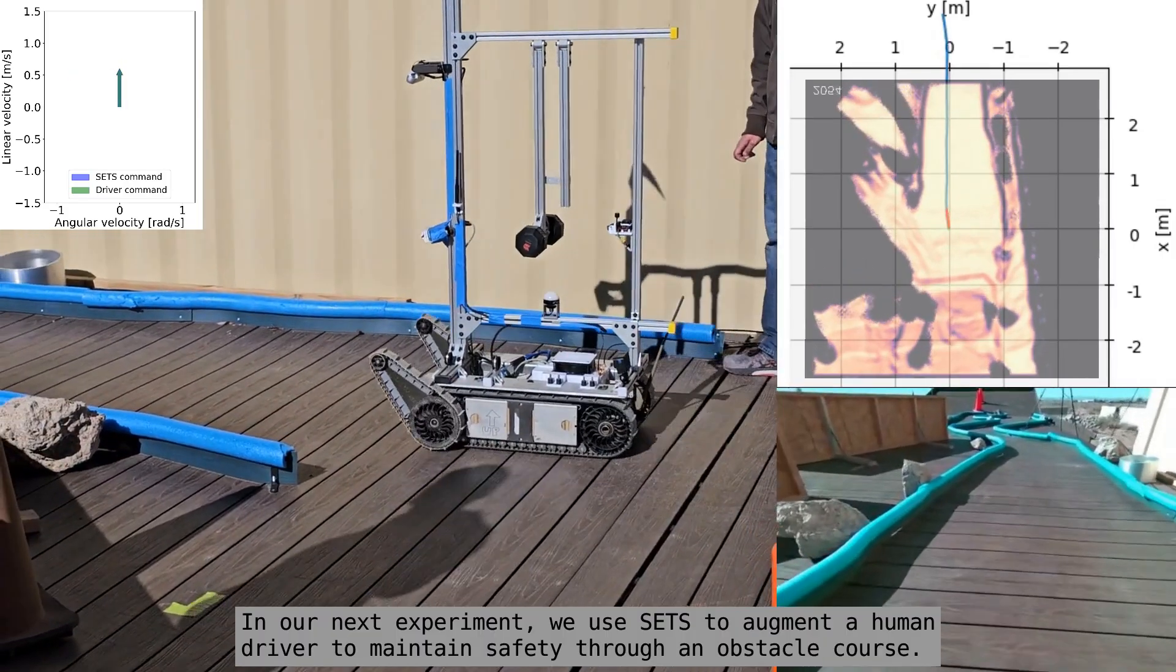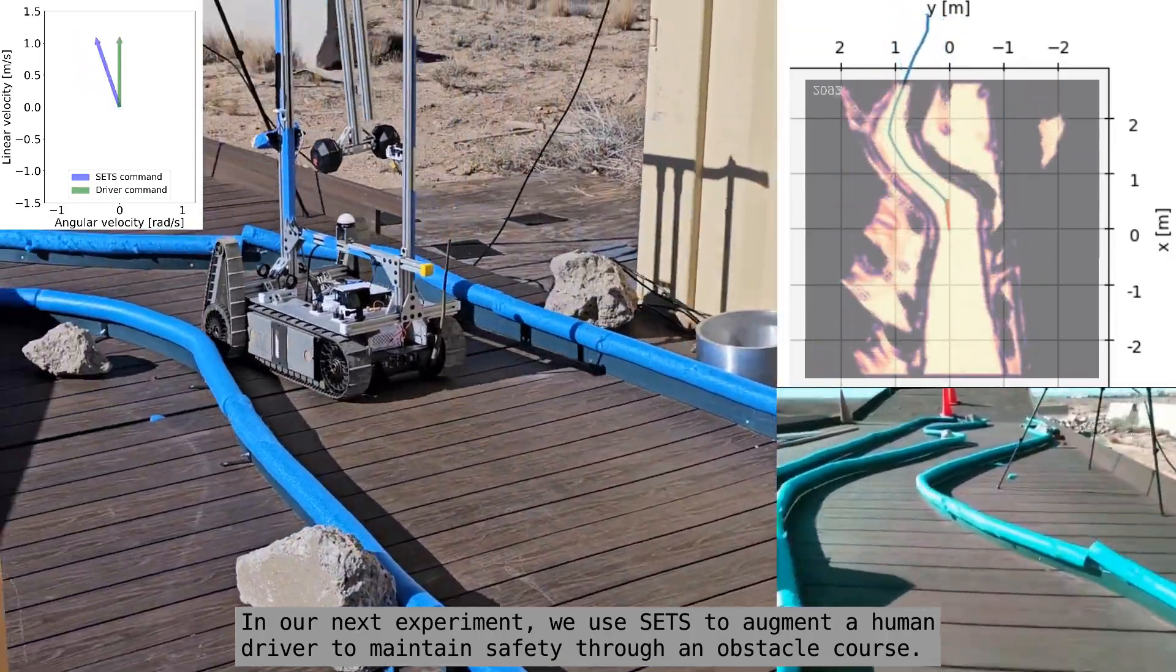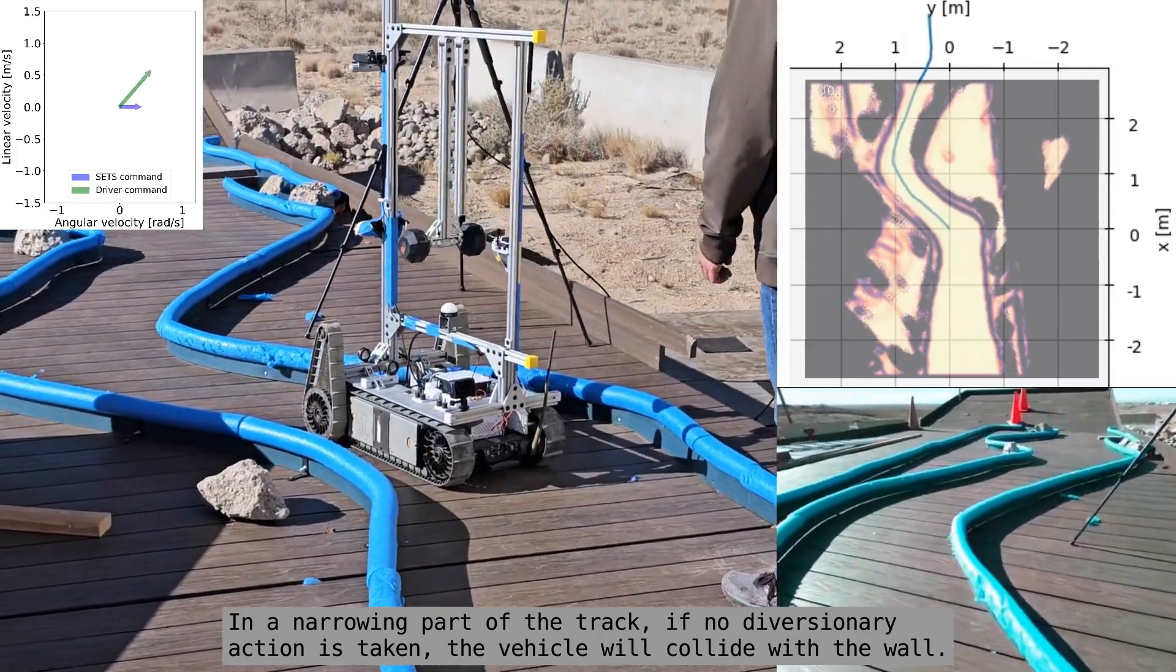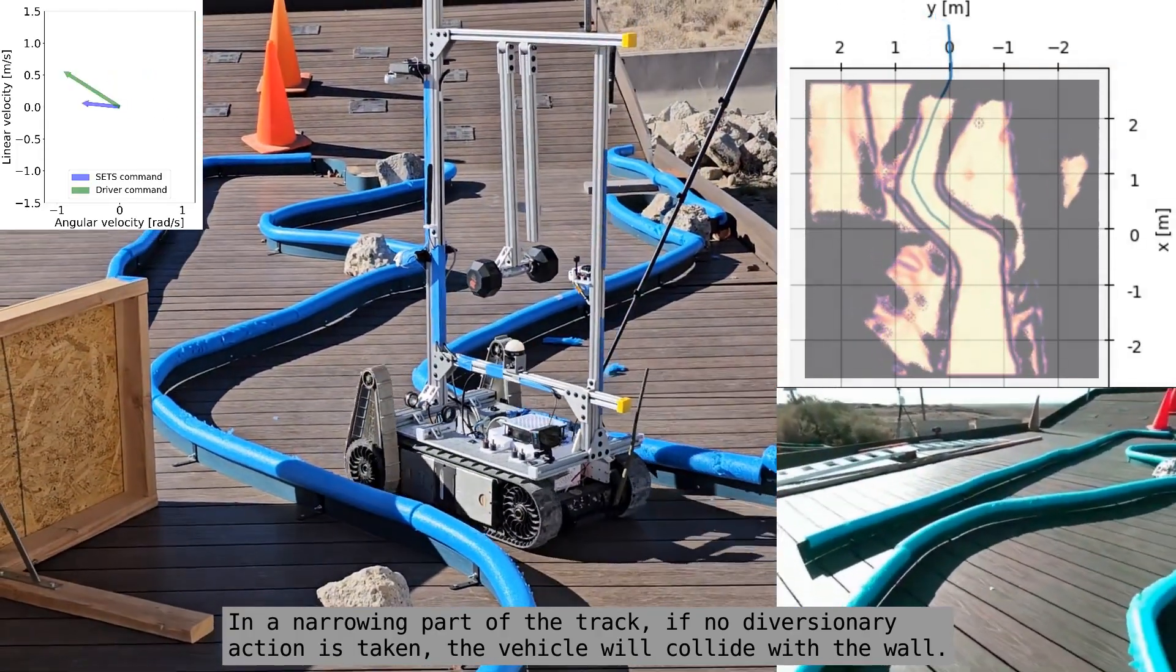In our next experiment, we use SETS to augment a human driver to maintain safety through an obstacle course. In a narrowing part of the track, if no diversionary action is taken, the vehicle will collide with the wall.